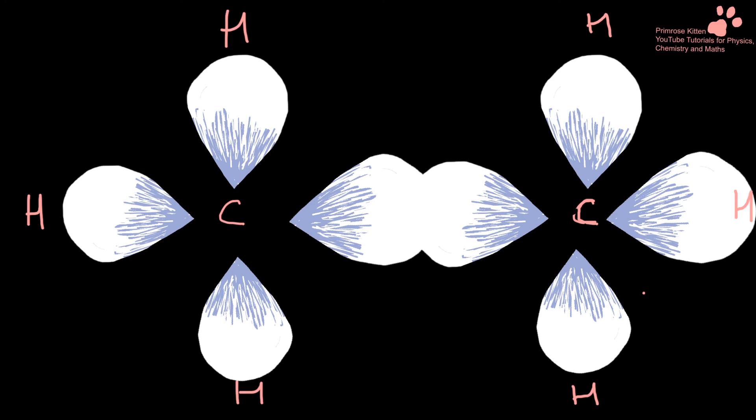Here in ethane, we can see that our two hybridisation orbitals, one from each carbon, are coming together and merging in the middle. And these are all single bonds. Double bonds, we're going to be introducing pi bonds, they get a bit more complicated.